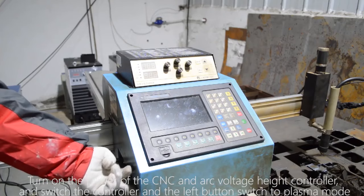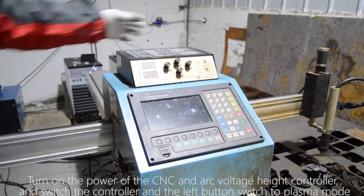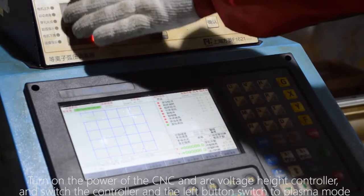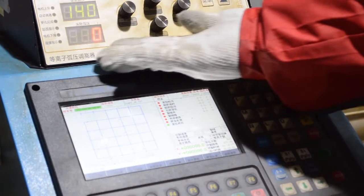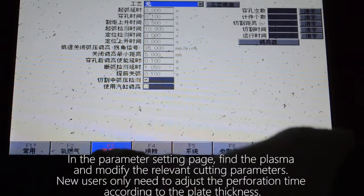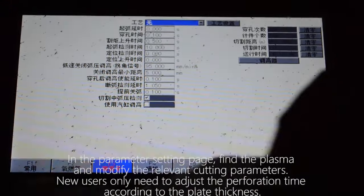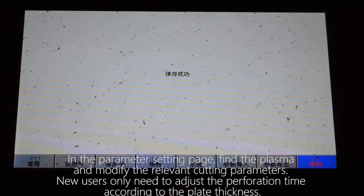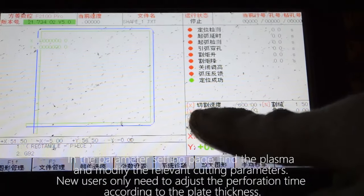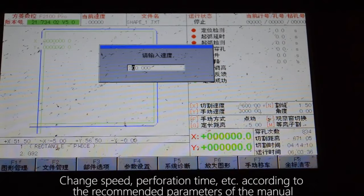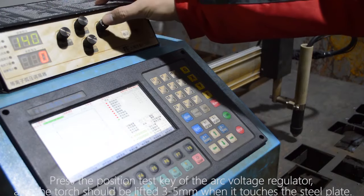Turn on the power of the CNC and arc voltage height controller and switch the controller and the left button switch to plasma mode. In the parameter setting page, find the plasma and modify the relevant cutting parameters. New users only need to adjust the perforation time according to the plate thickness. Change speed, perforation time, etc., according to the recommended parameters of the manual.